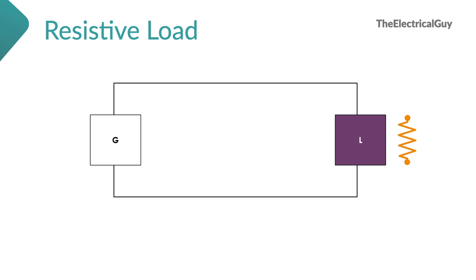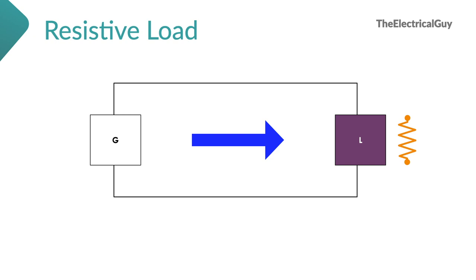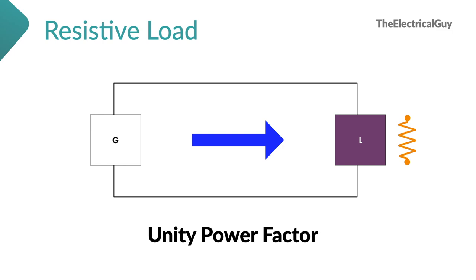As such type of load only consumes active power, power flows from source to load only. For instance, if this is the AC source connected to a resistive load, power will only flow from source to load — there will be no power flowing from load to source. As such loads only consume active power, the power factor of such loads is unity, which is a very good sign. If you want to know more about power factor in detail, you can watch my complete playlist on that, the link for which you will find in the description.